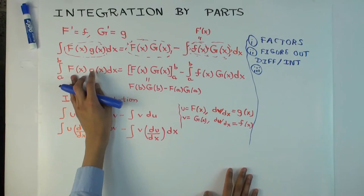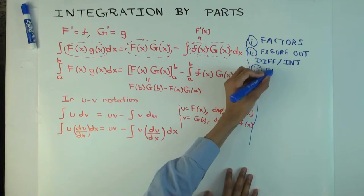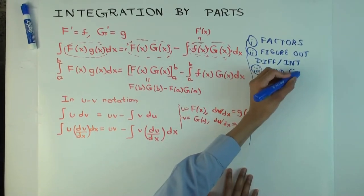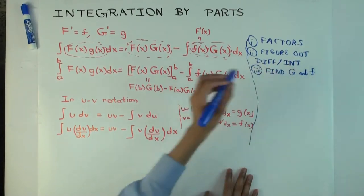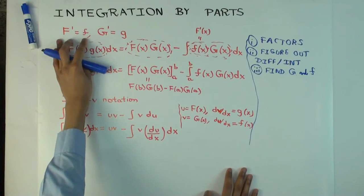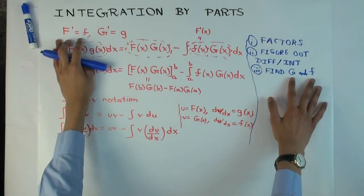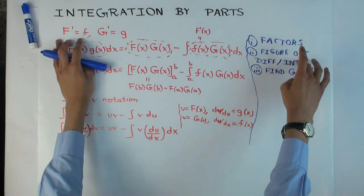Then the third step, as you pointed out, is to find an antiderivative. So find, if I'm using the fg notation, find the capital G and little f. Little f. Now, finding little f is not a problem because differentiation is almost always straightforward. You just use formulas and techniques. Finding capital G might require some work.